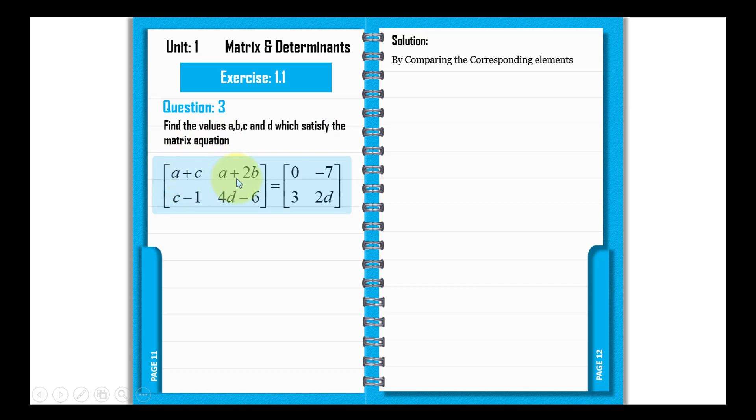a plus c, a plus 2b, c minus 1, 4b minus 6 is equal to 0, minus 7, 3, and 2d.